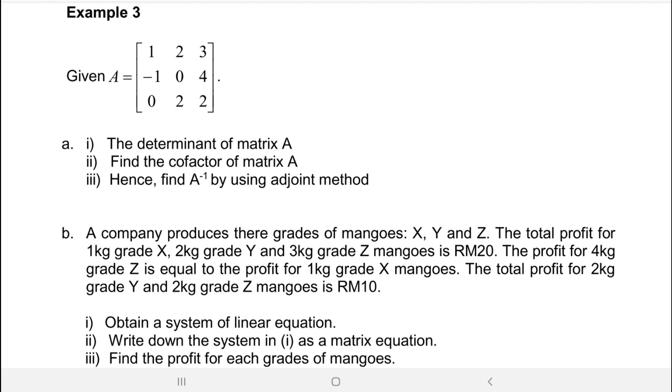For example 3, they give already a matrix A which is 3 times 3 matrix: 1, 2, 3, negative 1, 0, 4, and 0, 2, 2.